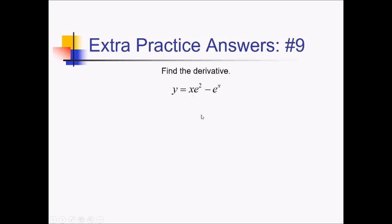On this problem, I'm trying to find the derivative of this expression. For this first term, x times e squared — before you start using a product rule on this one, realize that e squared is just a constant. So x times a constant: the derivative is just going to be the constant, which is e squared in this case. Minus — well, the derivative of e to the x is also e to the x.